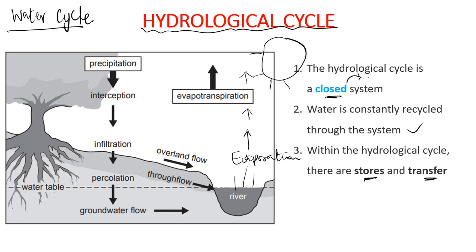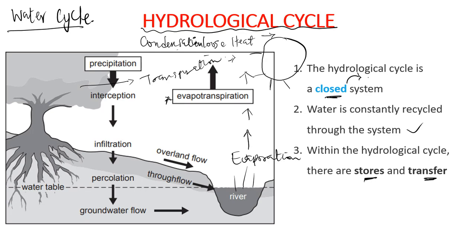Plants also lose water through a process called transpiration. The combination of evaporation and transpiration is known as evapotranspiration. As water vapor rises into the atmosphere, the higher it goes the cooler it becomes, losing heat. Through condensation it condenses to form clouds, which are made up of tiny particles of water.